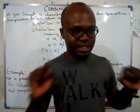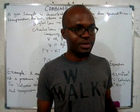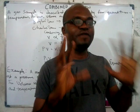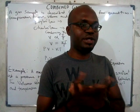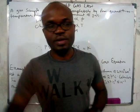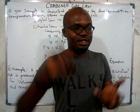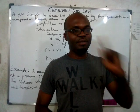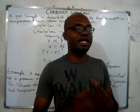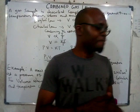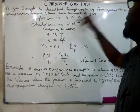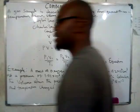To completely describe any gas, you have to identify and relate four quantities. Number one is the pressure of the gas, the temperature of the gas, the volume of the gas, and the amount or number of moles of the gas contained therein. A gas sample is described completely by four quantities: temperature, pressure, volume, and amount of gas.